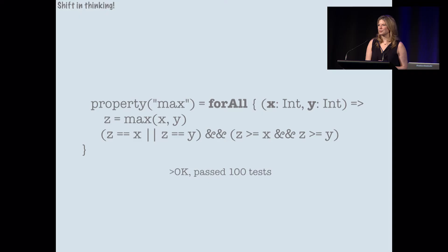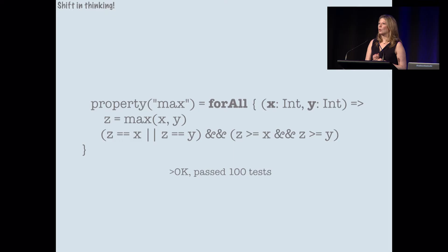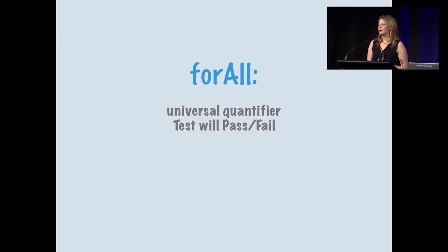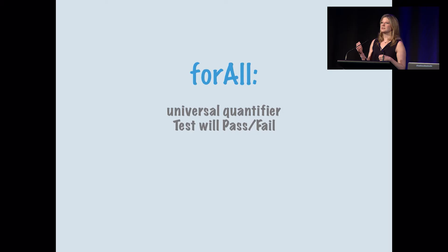So here I may write a property that says for all — two input parameters x and y — run those through max, and then I can assert some properties. I can say that z will always either be x or y, and z will always be greater than or equal to x, and z will be greater than or equal to y. See how we've twisted our brains to think just slightly differently about writing our tests. Three steps in writing property-based tests: first, we specify — and we almost always start with 'for all,' the universal quantifier. These tests will pass or fail — it's going to pass 10,000 or 100,000 or a million, depending on your configuration.